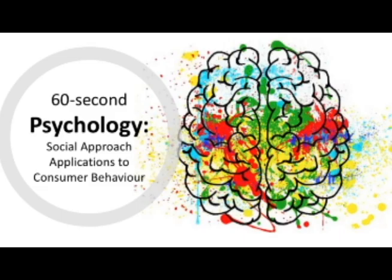Conformity is also more likely to occur in collectivist cultures rather than individualist ones. Therefore, social proof is more effective in collectivist cultures. These criticisms mean that although the social approach is widely used in advertising, its effectiveness might be limited.